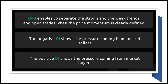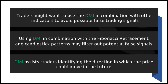DMI enables traders to separate strong and weak trends and open trades when price momentum is clearly defined. The negative DI shows pressure coming from market sellers, while positive DI shows price pressure from market buyers. Remember, negative DI is derived from the lows and positive DI from the highs achieved, not from opens and closes. Traders may want to use DMI in combination with other indicators such as Fibonacci retracement or candlestick patterns to filter out false signals.